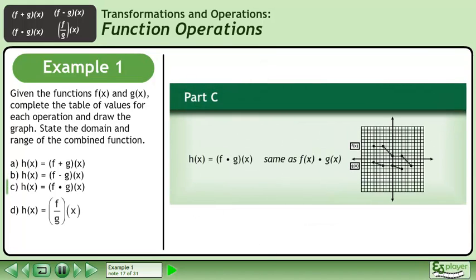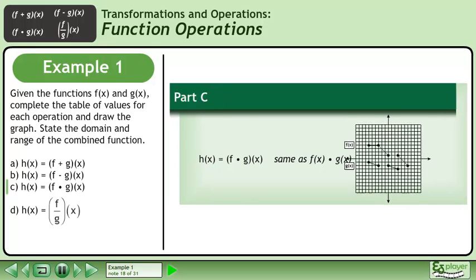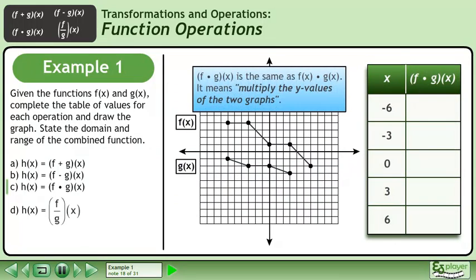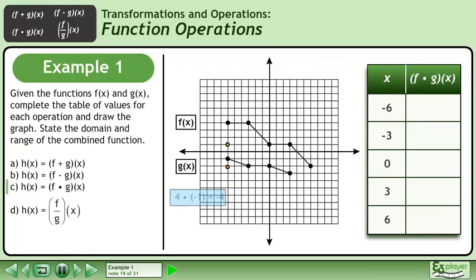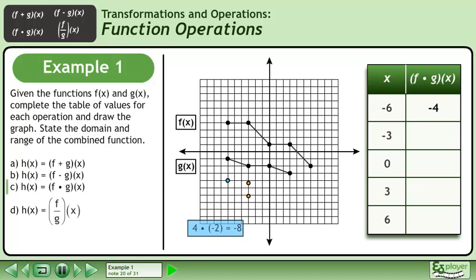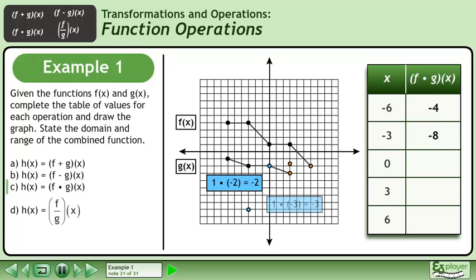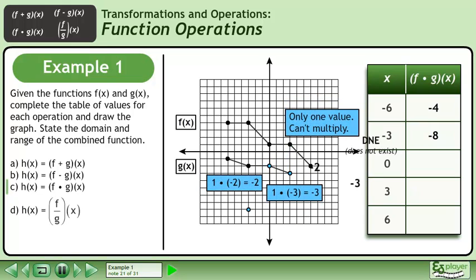In part c, we'll draw the graph of h equals f times g. f times g means multiply the y-values of the two graphs. Multiply the y-values of the first point to get negative 4, then the next point to get negative 8. Multiply the y-values of the remaining points and record the products in the table.